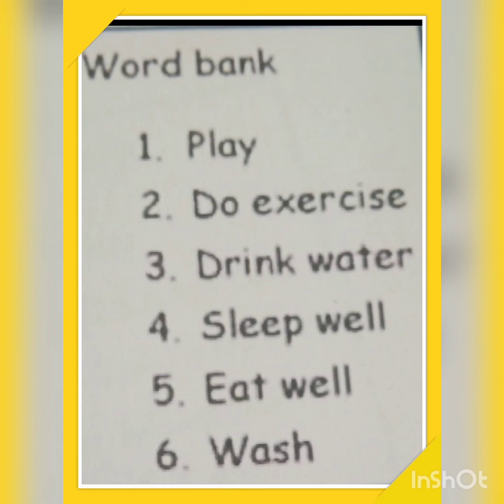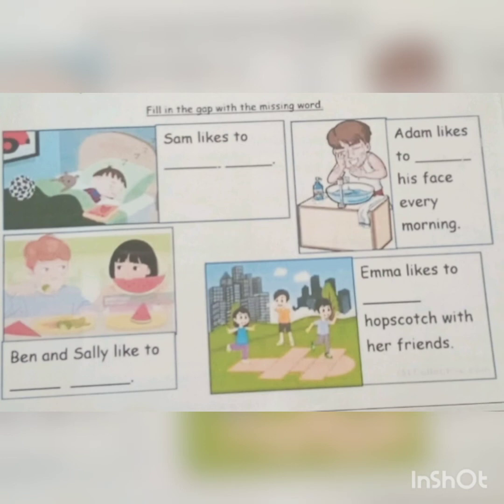Time is finished. Let's start to answer. The first one: Sam likes to sleep well. The second: Adam likes to wash his face every morning. The third: Ben and Sally like to eat vegetables — Ben eats fruit and Sally eats watermelon. The last one: Emma likes to play hopscotch with her friends. Good job!